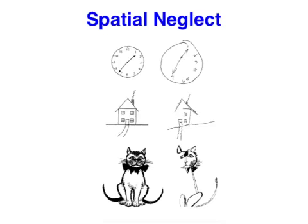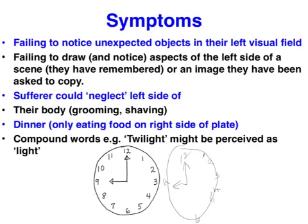In this clip we're covering spatial neglect, also known as hemi-neglect or neglect syndrome. There is a wide array of variations of this disorder, hence symptoms will differ markedly from patient to patient. So here's just a short and simple list.